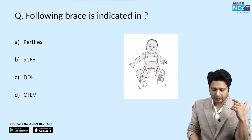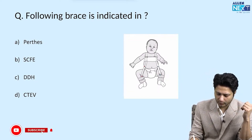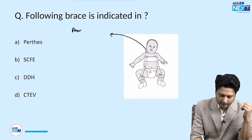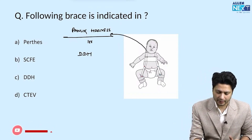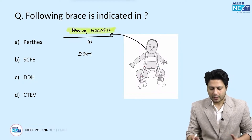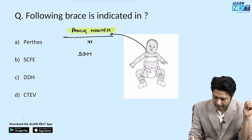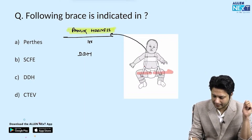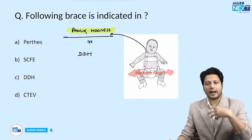The first one which has already been asked is about the developmental dysplasia of the hip joint. The name of the splint here is the Pavlik harness, and this Pavlik harness is indicated in developmental dysplasia of the hip joint. You identify a Pavlik harness based on the positioning of the thigh — whenever the hip joints are kept in abduction, held in abduction and immobilized, it is known as a Pavlik harness.